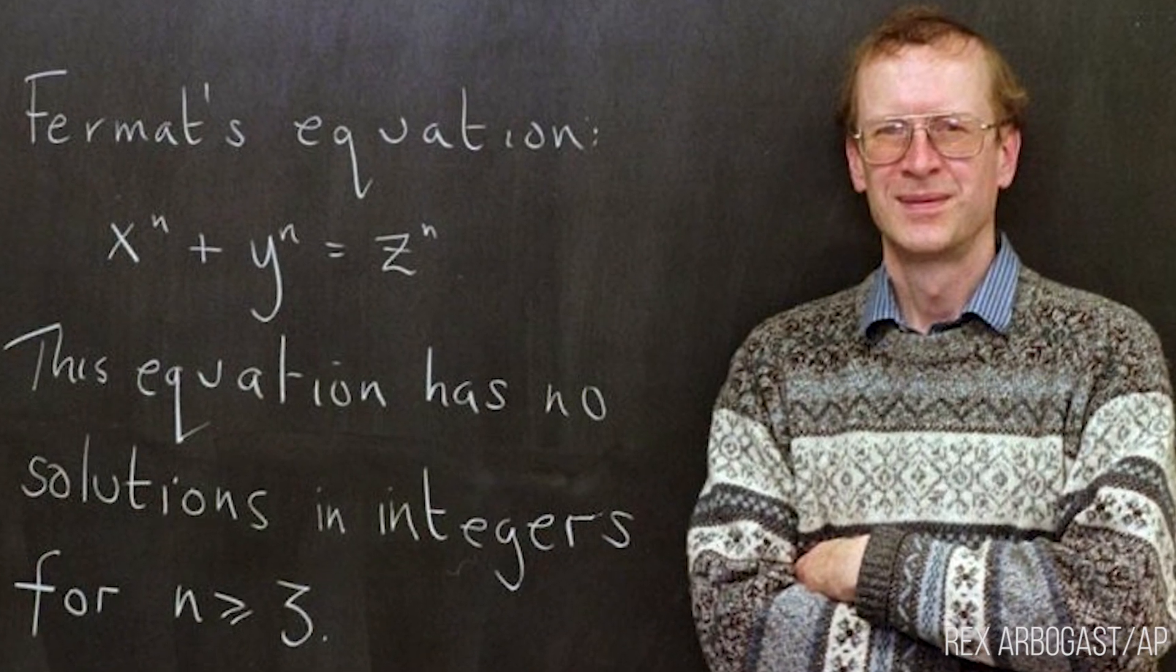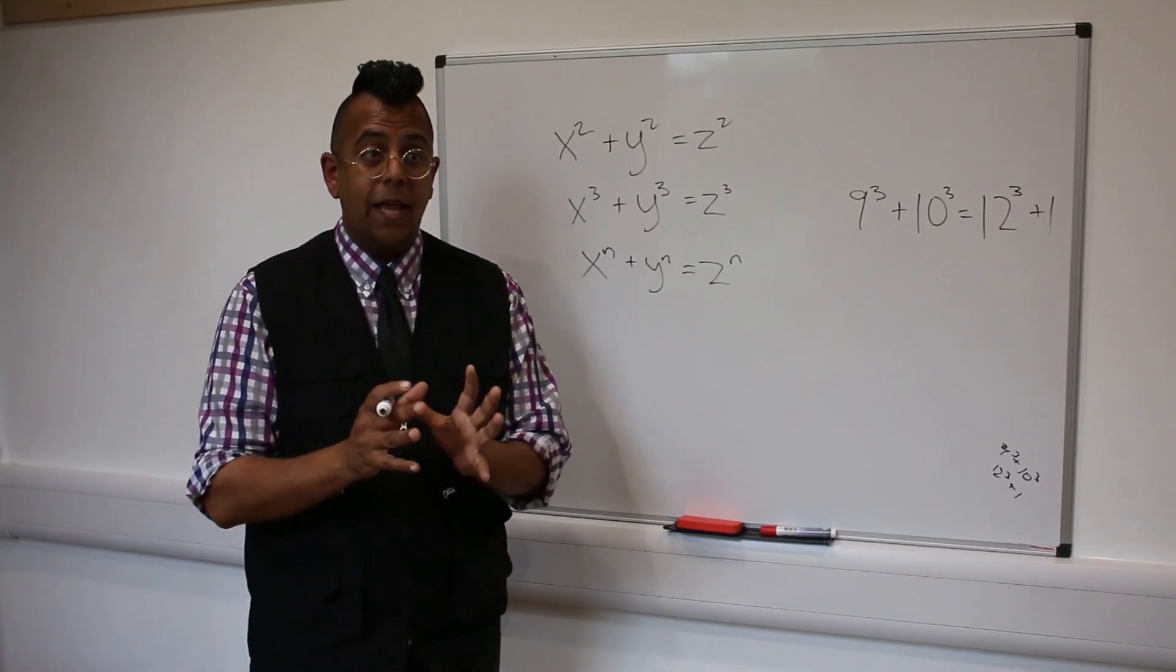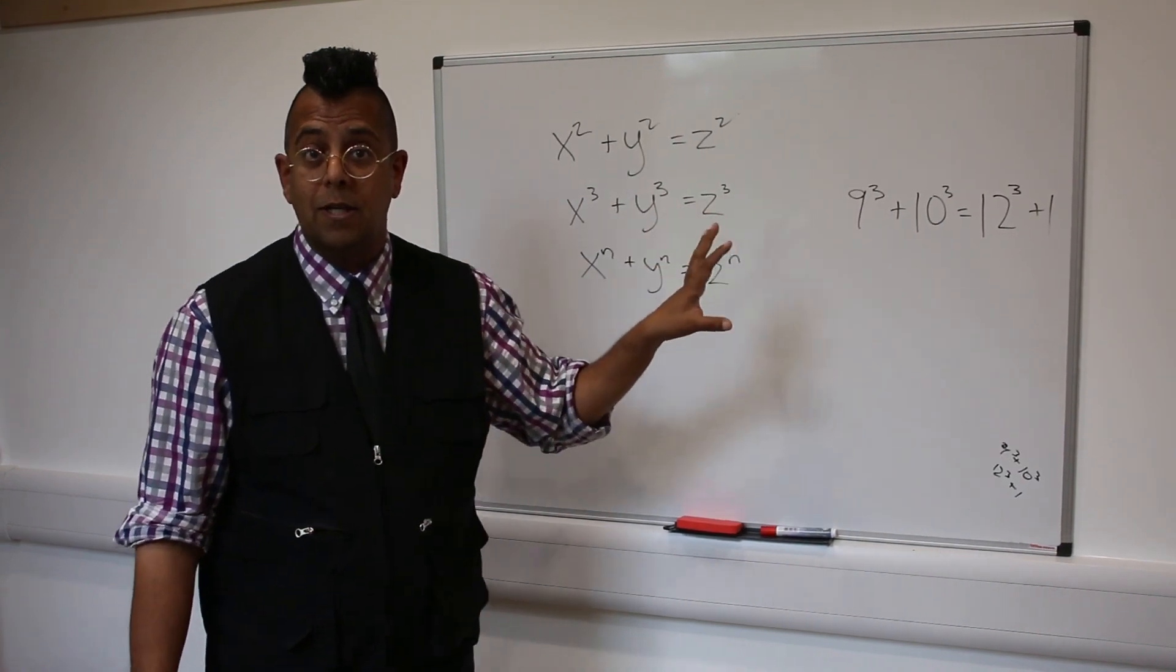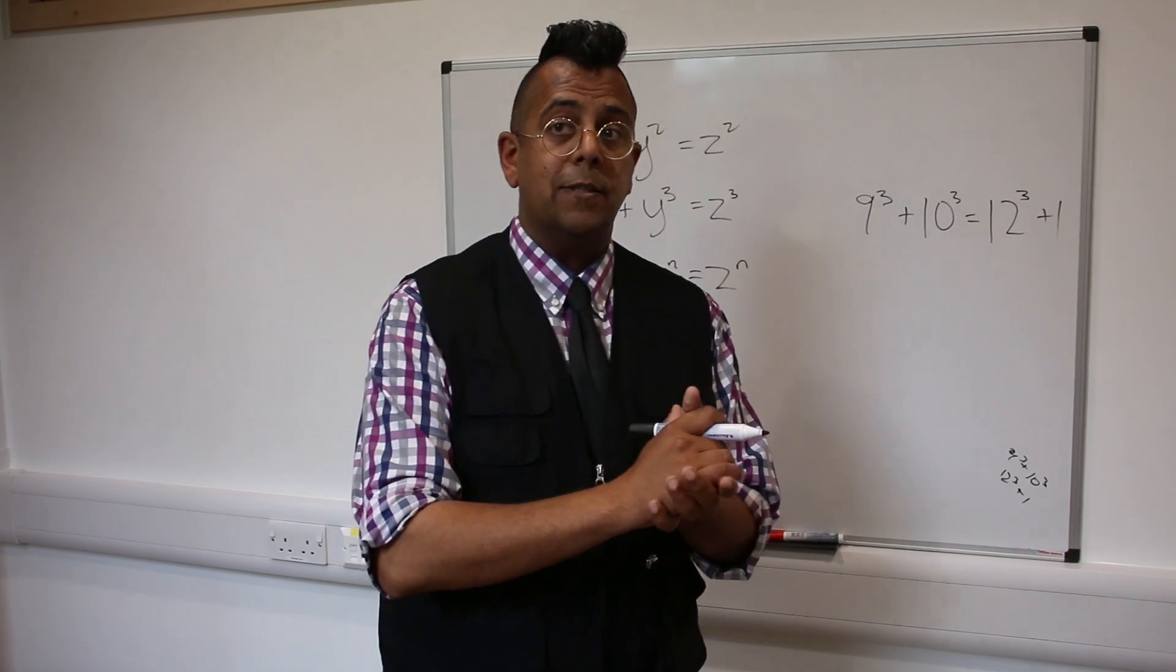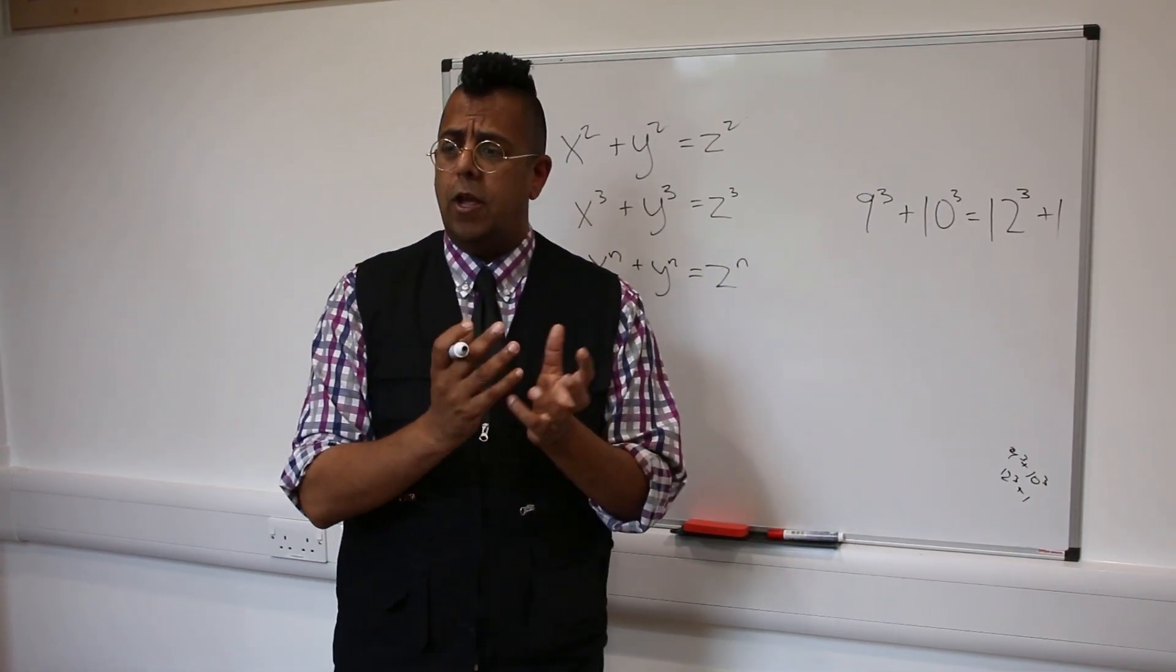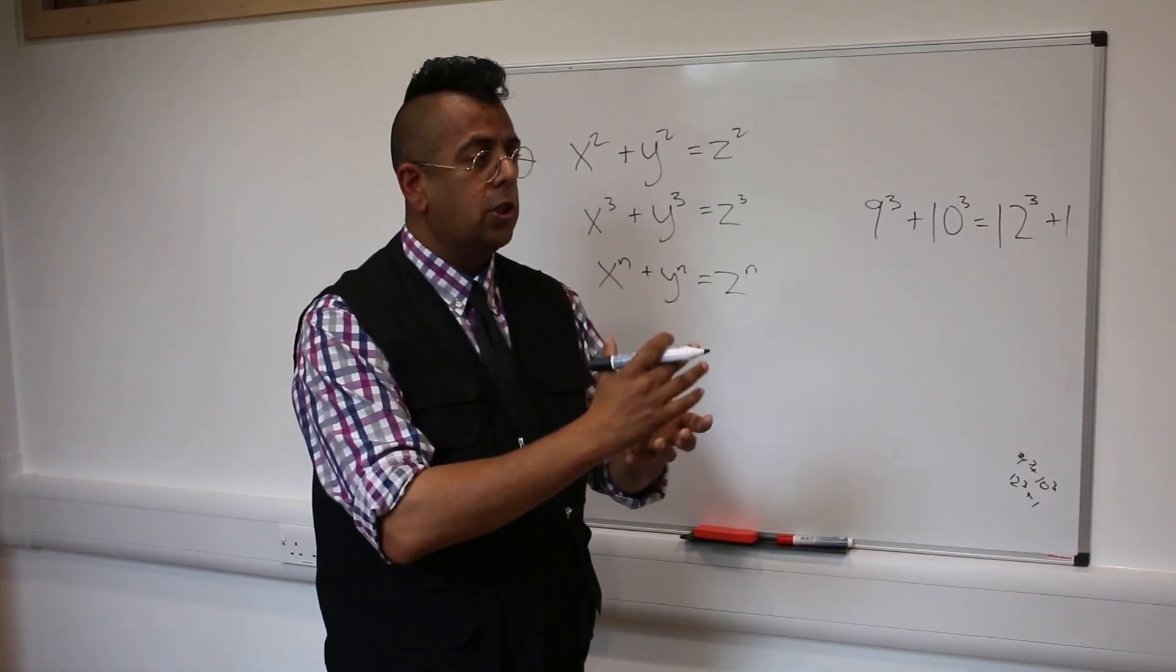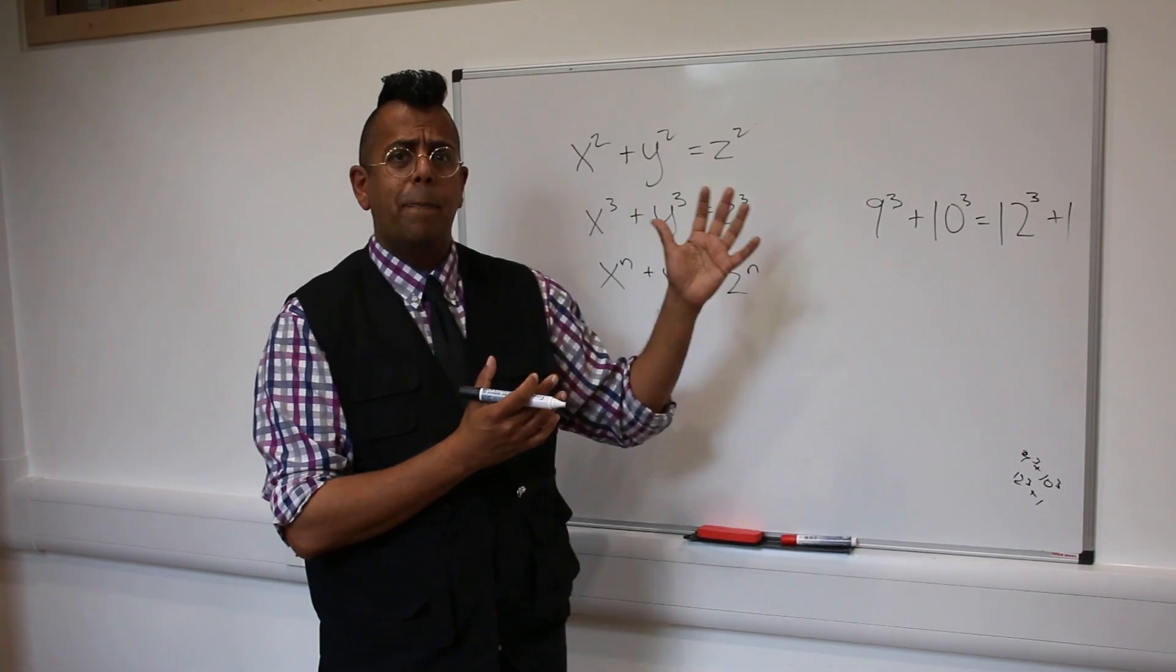The mathematician in question was Sir Andrew Wiles, and he'd been working in secrecy for seven years on trying to find a proof of Fermat's Last Theorem. He'd dreamt about finding a proof ever since he was a child. And it's an extraordinary story of childhood ambition, adult obsession, working on a proof that took him about 200 pages.